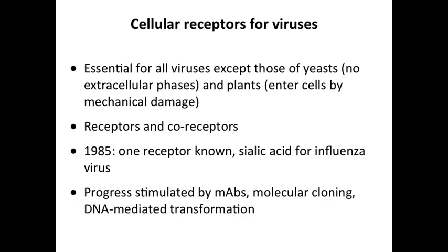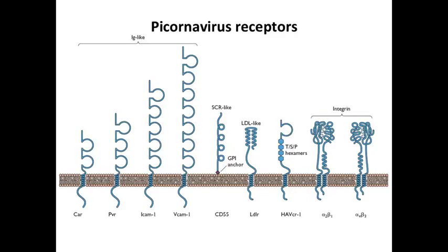For HIV you'll see receptor and co-receptor, but really they both deserve the name receptor. As late as 1985 we only knew one virus receptor: sialic acid for influenza virus, which we'll discuss today. Right after that, the field accelerated rapidly, driven by the availability of monoclonal antibodies, recombinant DNA technology, cloning, and DNA-mediated transformation. Now we know many virus receptors, and new ones seem to be identified every month.